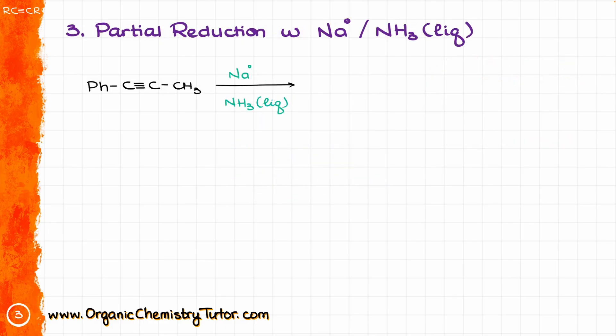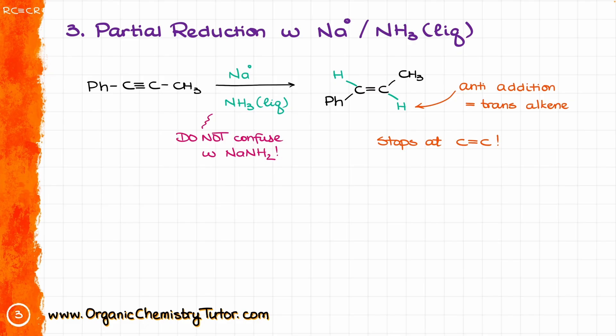If we want a trans double bond instead of cis, we use partial reduction with sodium in liquid ammonia. One important thing: sodium in liquid ammonia is not the same as NaNH2, which is sodium amide. They are two separate substances, not combined into the same molecule. With sodium in liquid ammonia, we get the trans alkene, and just like Lindlar's catalyst, the reaction stops at the double bond.